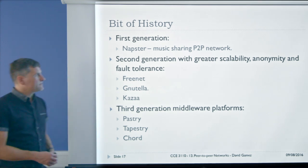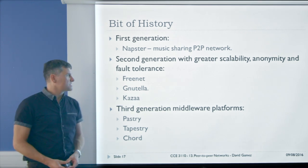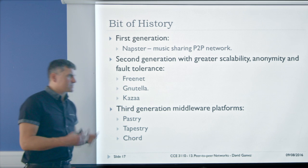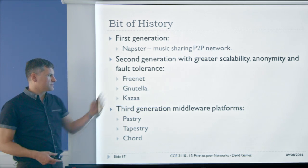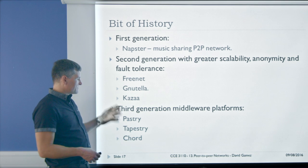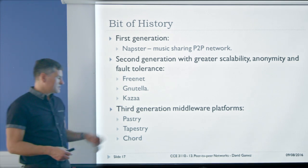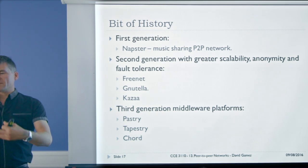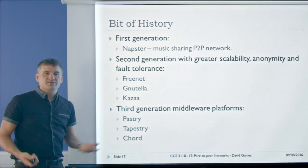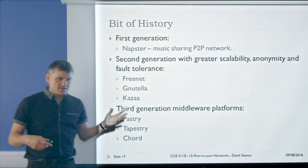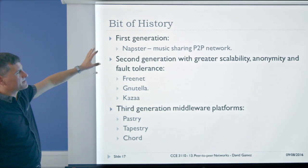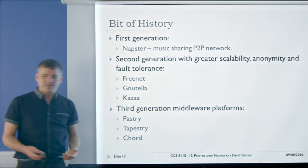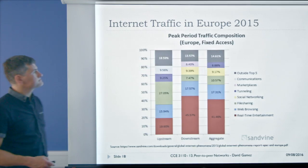A little bit of history: we started with Napster, the classic file-sharing network built around a central index server, which made it easy to shut down. Then came second-generation networks — more scalable, more anonymous, more fault-tolerant — such as Freenet, Gnutella, and KaZaA. These evolved into third-generation middleware platforms: Pastry, Tapestry, and Chord, which are distributed hash table architectures for storing key-value pairs across large numbers of machines. BitTorrent started more like Napster with index servers and has moved toward a distributed hash table model for storing the location of file chunks.